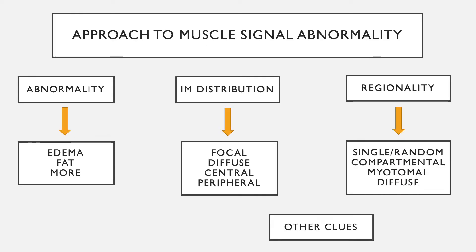How do we approach muscle signal abnormality? We look for the abnormality and describe it: is this edema, fat, or something else? We look for the intramuscular distribution — whether it is focal, diffuse, central, or peripheral. We look for the regionality — whether it is single, random, compartmental, myotomal, or diffuse. And then we look for other clues.